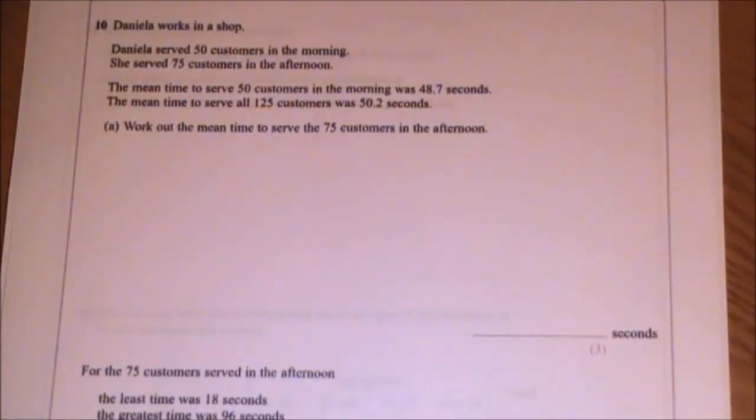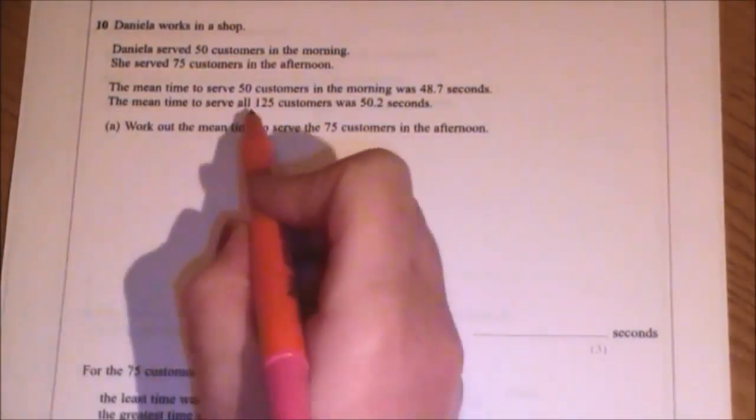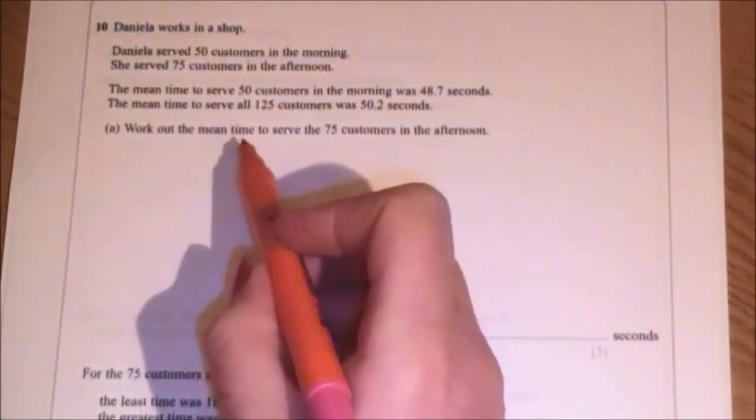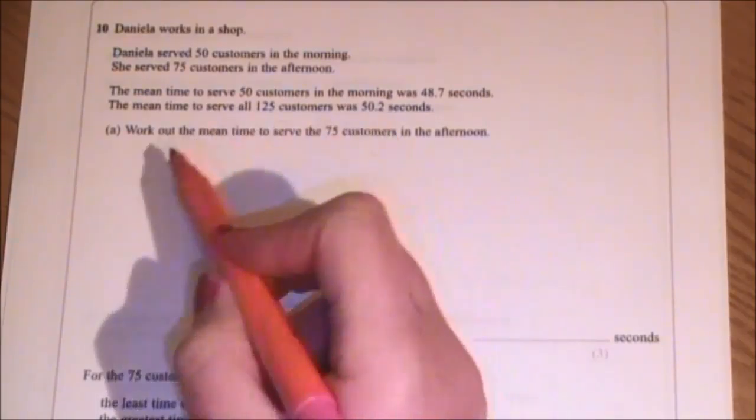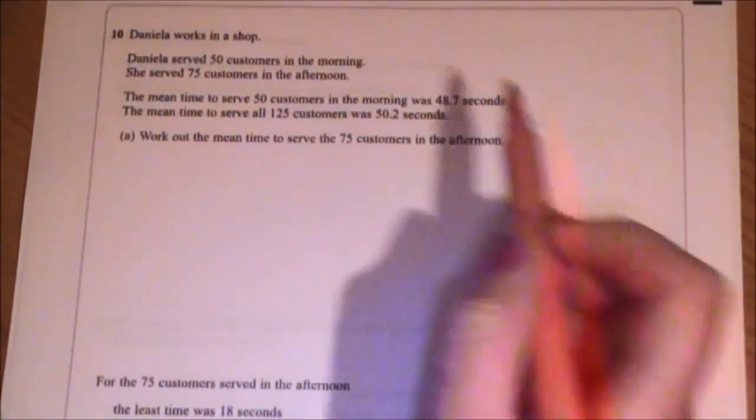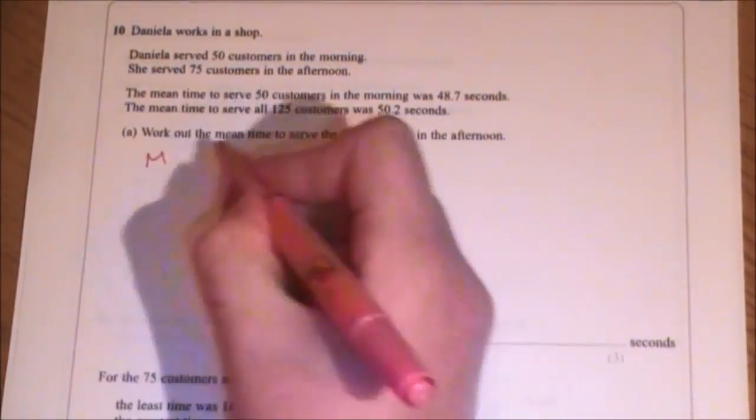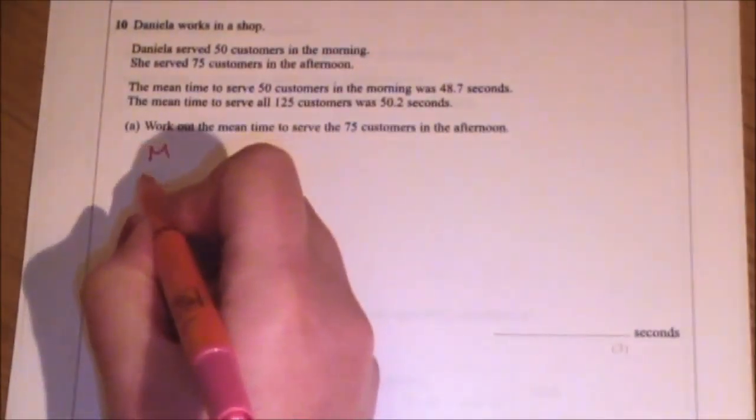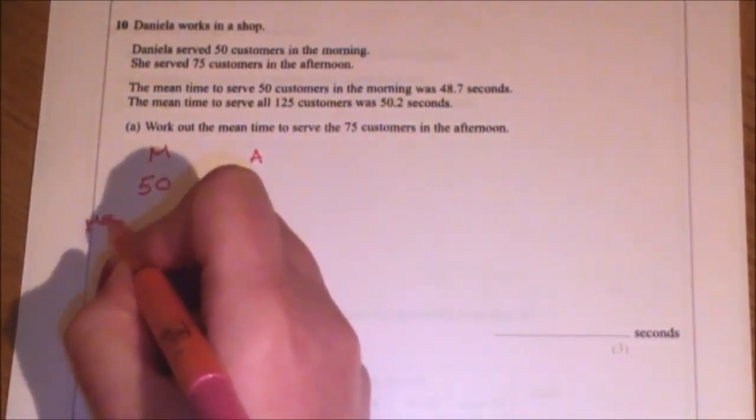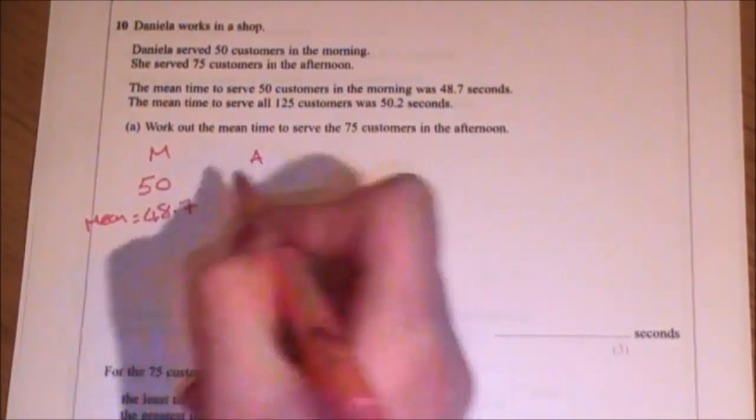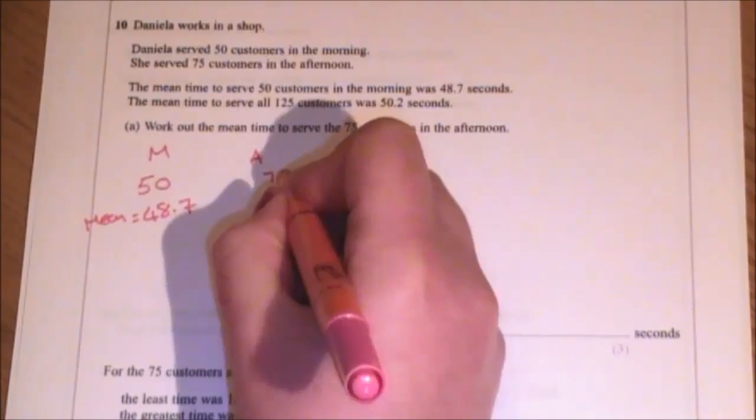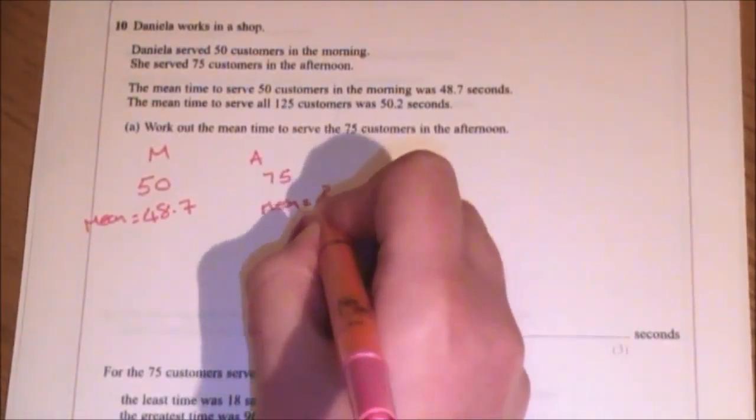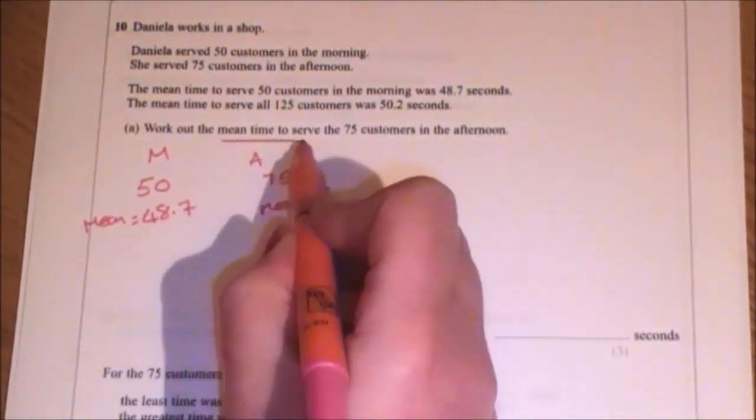Question 10 is a really tricky mean question. Not tricky mean as in tricky and mean, but it's tricky and it's about the mean. Jokes. So question 10. Daniela works in a shop. Daniela served 50 customers in the morning, 75 customers in the afternoon. The mean time to serve all 50 customers in the morning was 48.7 seconds. The mean time to serve all 125 customers was 50.2. Work out the mean time to serve the 75 customers in the afternoon. I've forgotten what they were talking about up there because there's a lot of information. So I know I'm talking about a morning and an afternoon. I know that in the morning there were 50 customers and there was a mean serving time of 48.7 seconds.